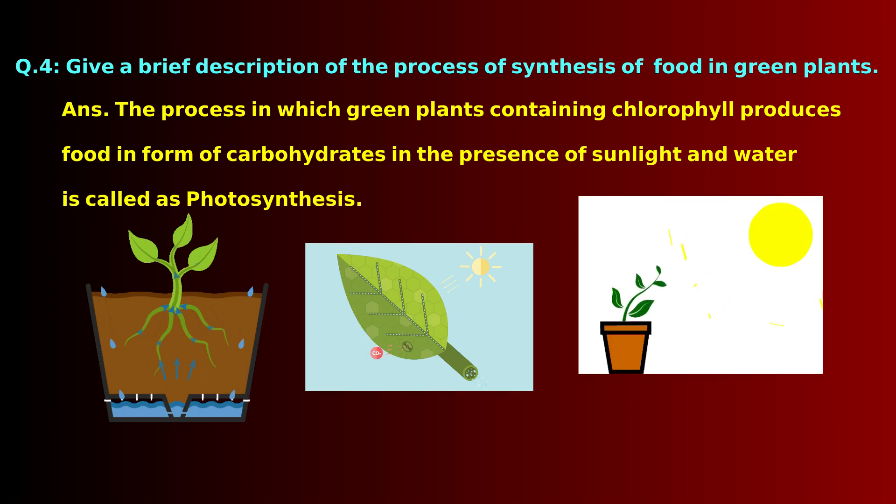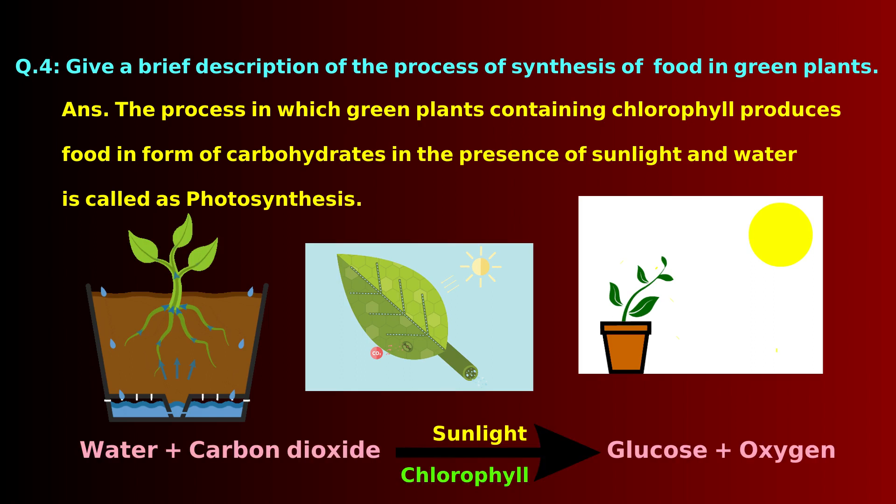Solar energy or sunlight is used to break water into hydrogen and oxygen. This hydrogen is combined with carbon dioxide to form food for the plants, which is ultimately used by animals as well. Photosynthesis can be represented by the equation shown on screen.